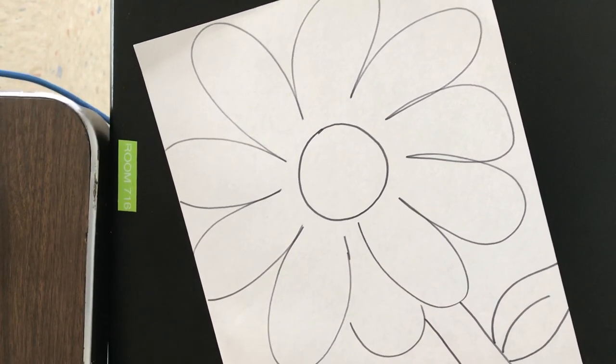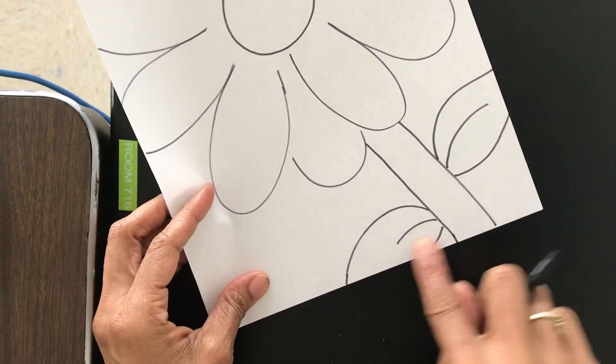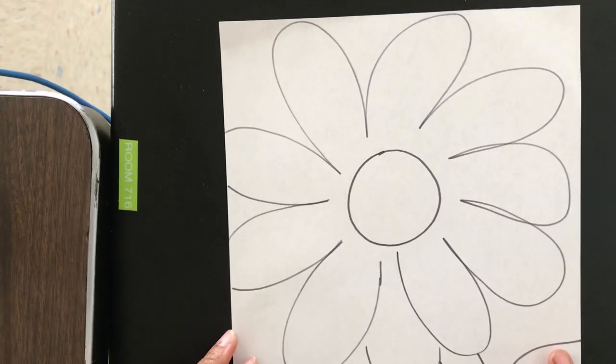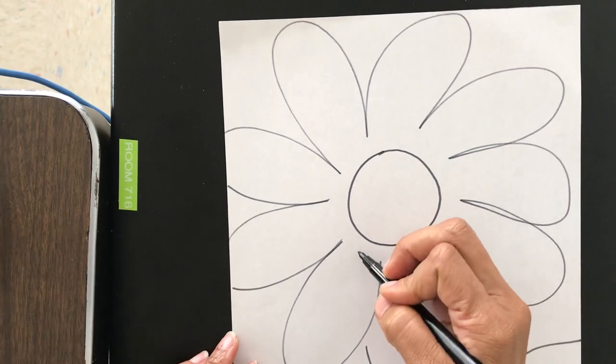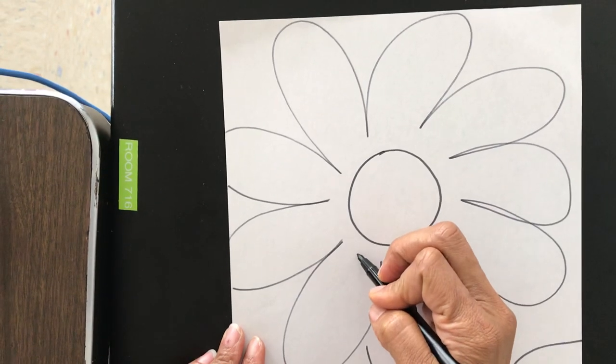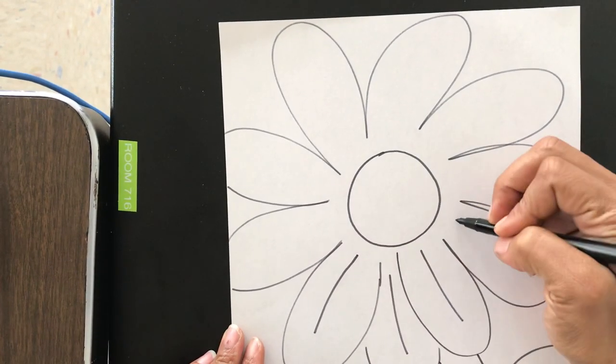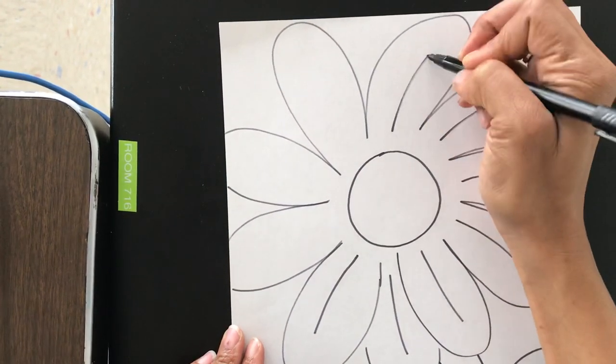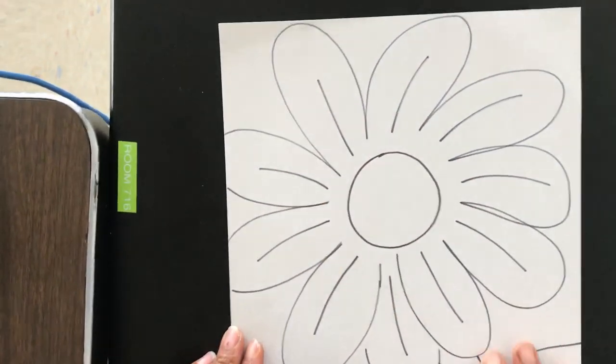And again, guys, look. I went to the edge of the paper. Everybody see that? I went to the edge of the paper on both sides. I want you to do that. That's cool. It's okay to go to the edge of the paper. And then I'm going to put little texture lines on my petal. Cool.